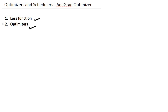As far as optimizers are concerned, we are going to discuss in detail the different types of optimizers available in PyTorch in subsequent videos, and mathematically understand the workings of each of them. In this video we will discuss in detail the working of an optimizer called the Adagrad optimizer.